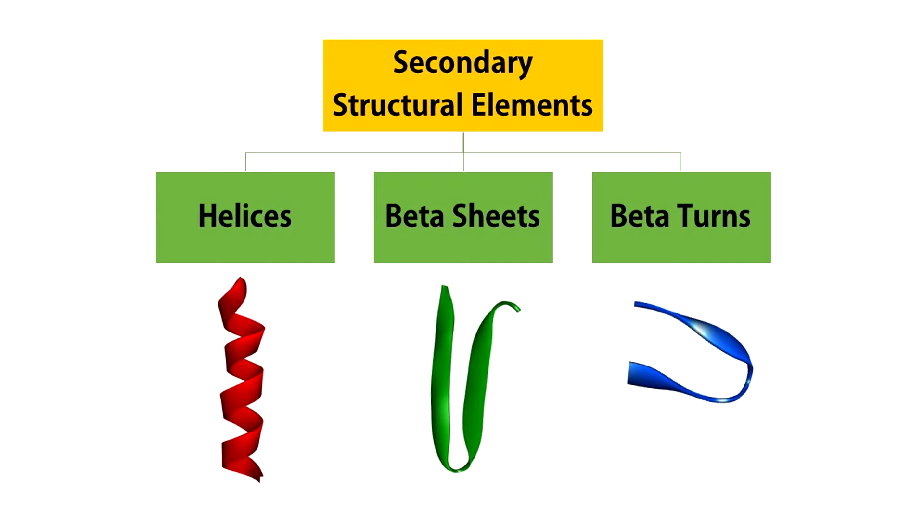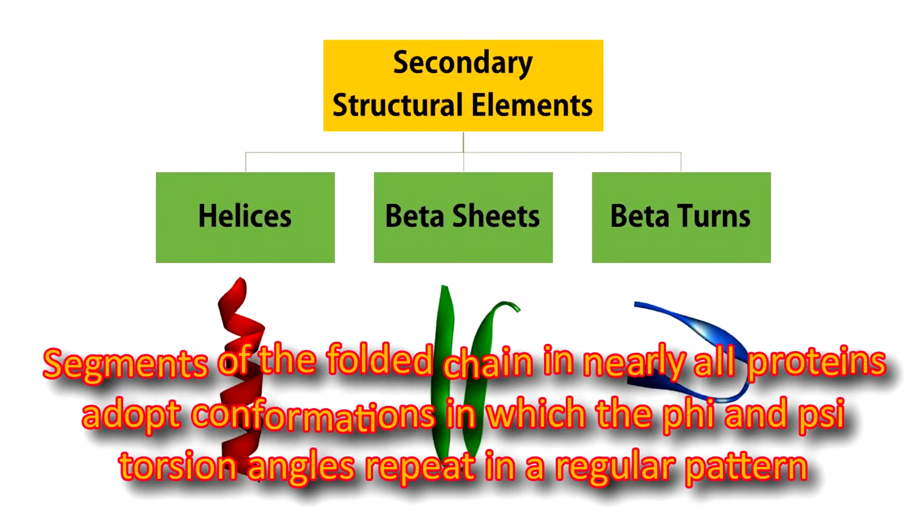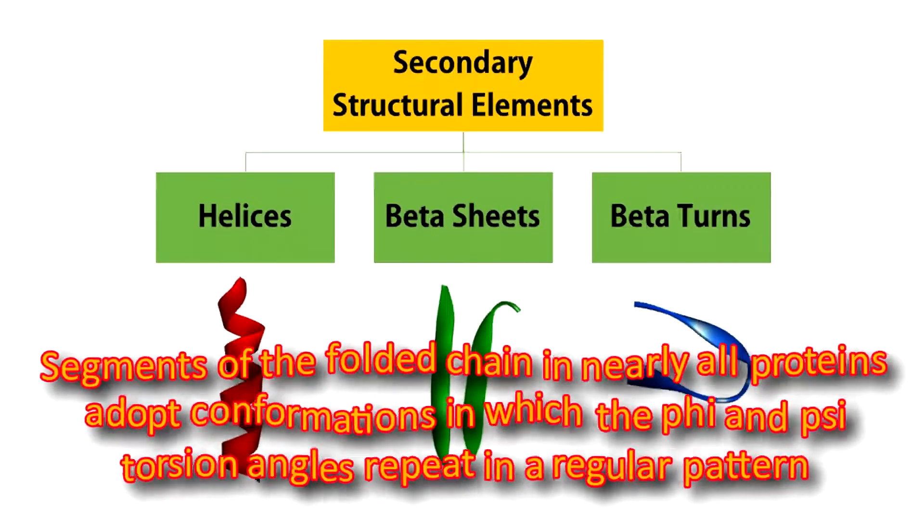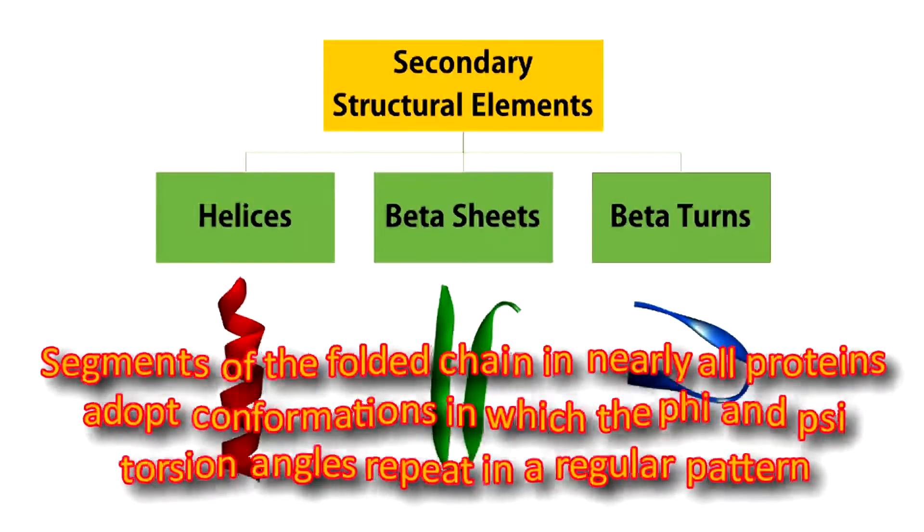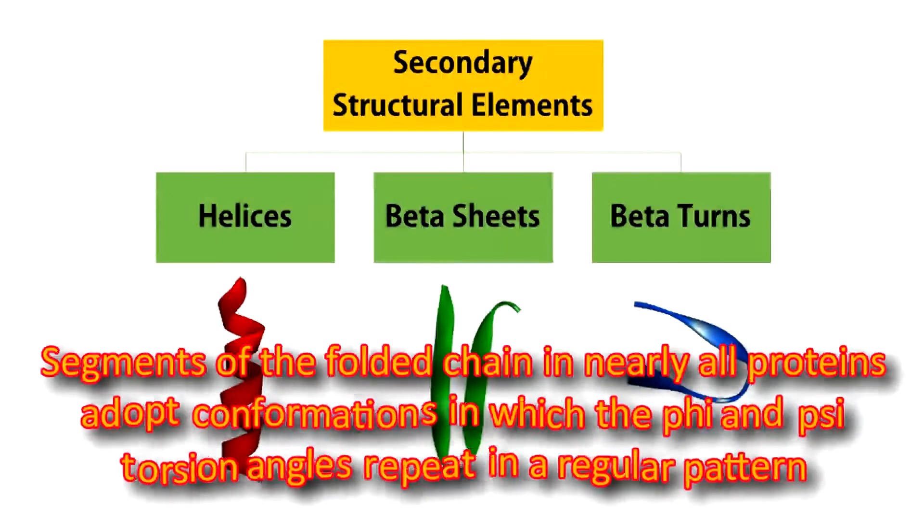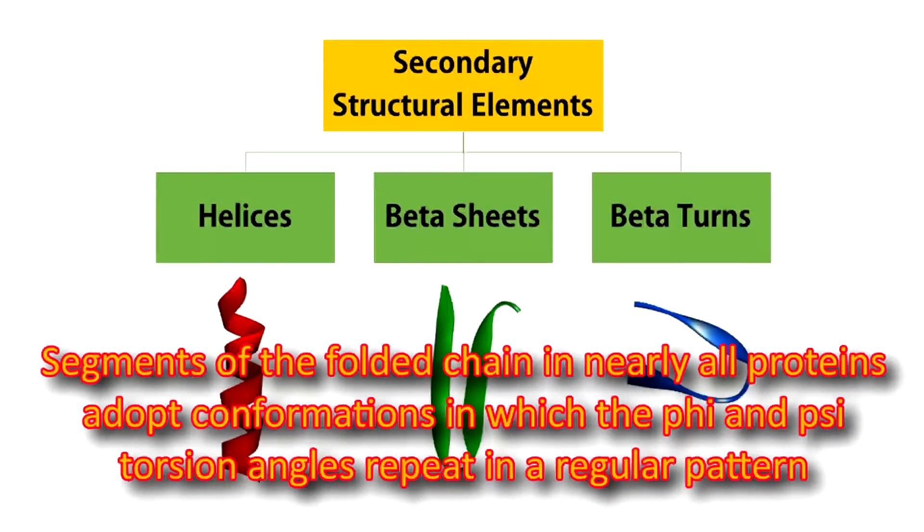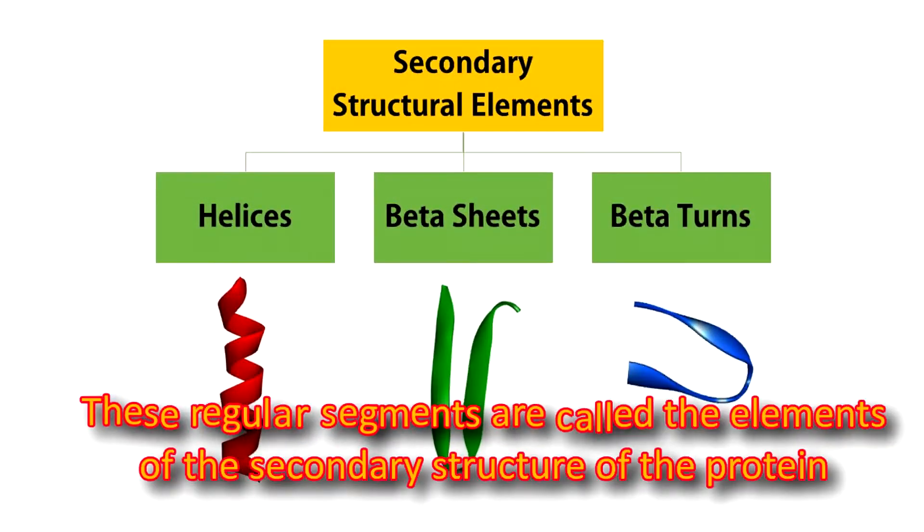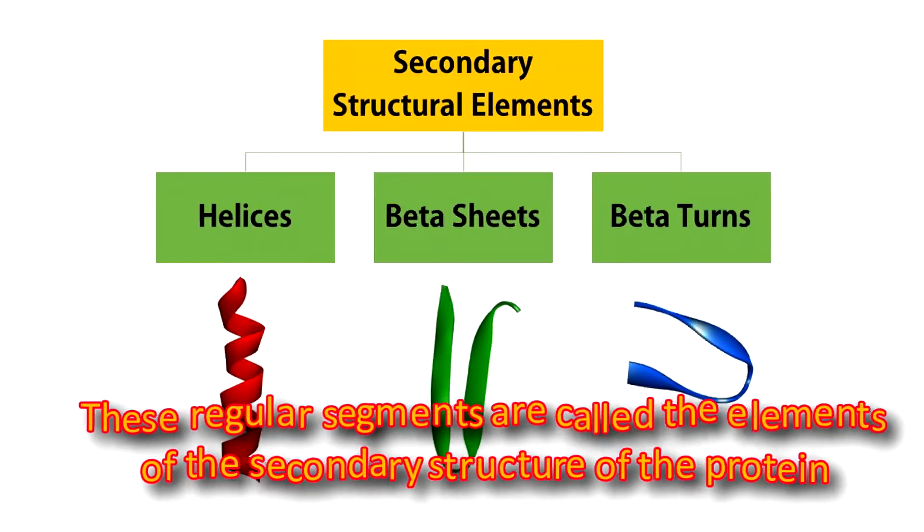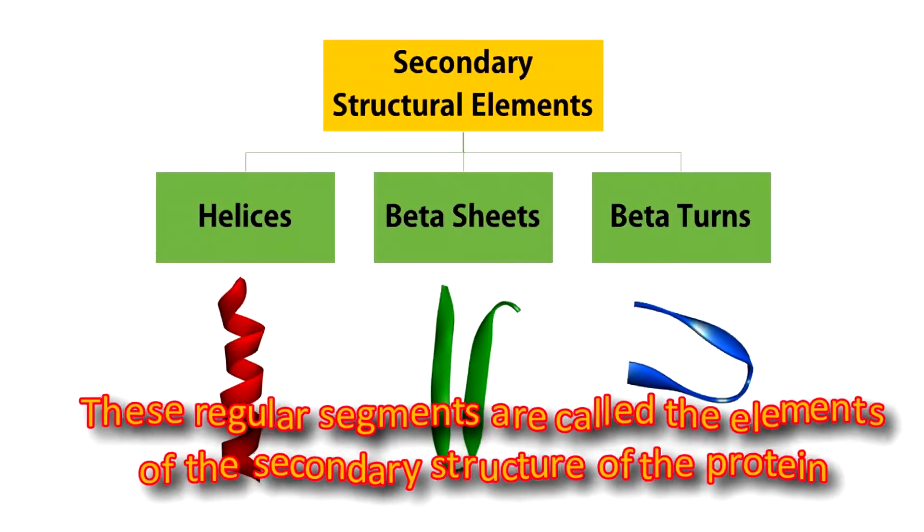most soluble proteins are globular and they have a tightly packed core consisting primarily of hydrophobic amino acids. Segments of the folded chain typically all adapt conformations in which the phi and psi torsion angles repeat in a regular pattern. These regular segments are called the elements of secondary structure of the protein.